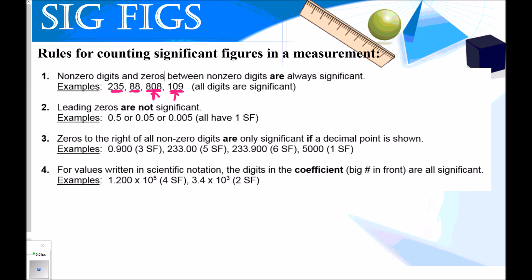Number two, leading zeros are not significant. So leading zeros are zeros in front of our first real number. So the five here is our first real number. Zeros in front of that are not significant. So all of these numbers have one significant figure.